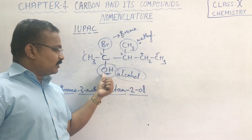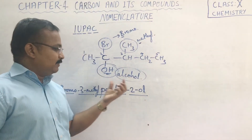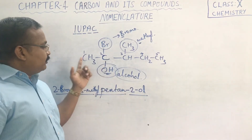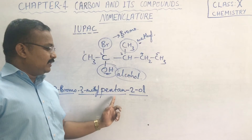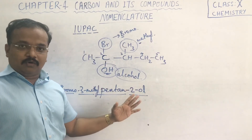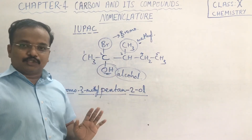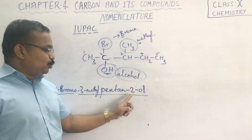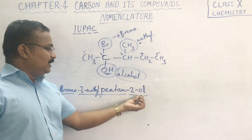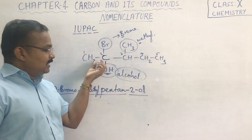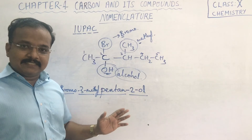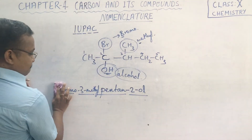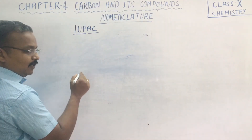Since the OH group is at the second position, you cannot simply write 'pentane' — it has to be written as pentan-2-ol because the alcoholic functional group is at the second position. If it were at the first position, you could write pentan-1-ol, but the positional number is needed to indicate where the OH group is present.